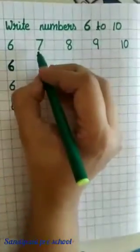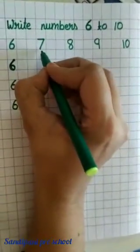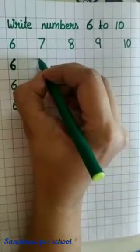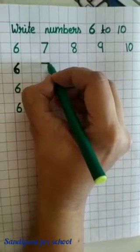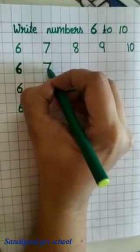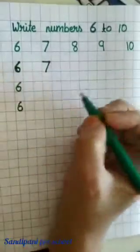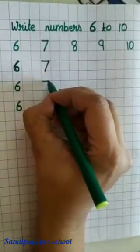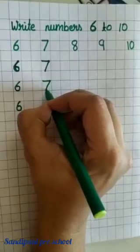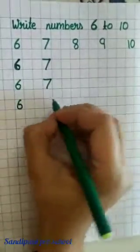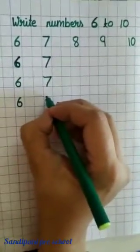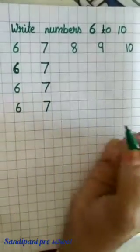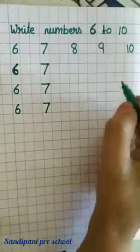Now, which number is this? Number 7. So, let's write number 7. Slipping line and slanting line, number 7. Slipping line and slanting line, number 7. Slipping line, slanting line, number 7.